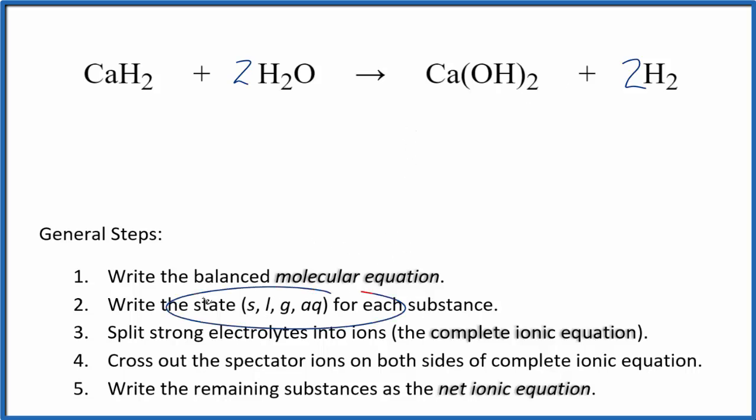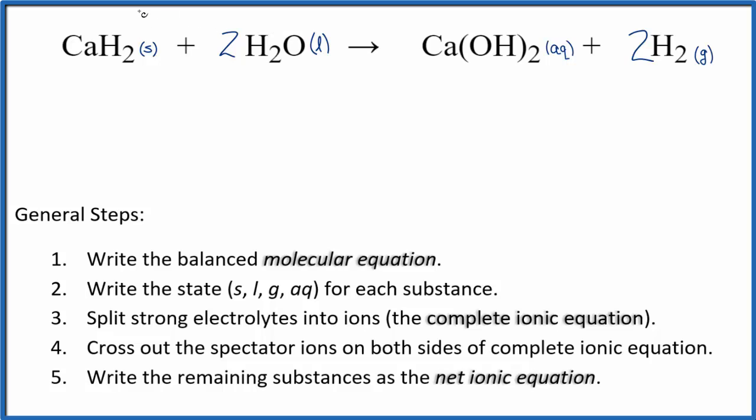Now we can write the state for each substance. That looks like this. So calcium hydride is a solid, water is a liquid. We're going to assume we have excess water here so that this would be aqueous when we're done. If we had the exact stoichiometric amount it might be a solid. Then we have hydrogen gas. So we're assuming excess water in this reaction.